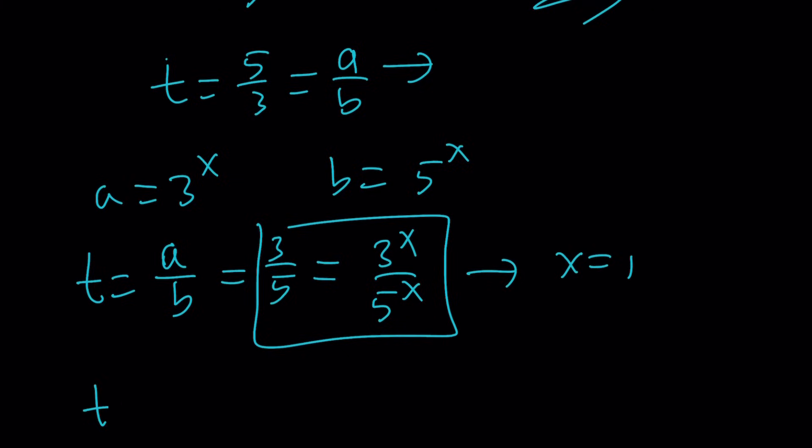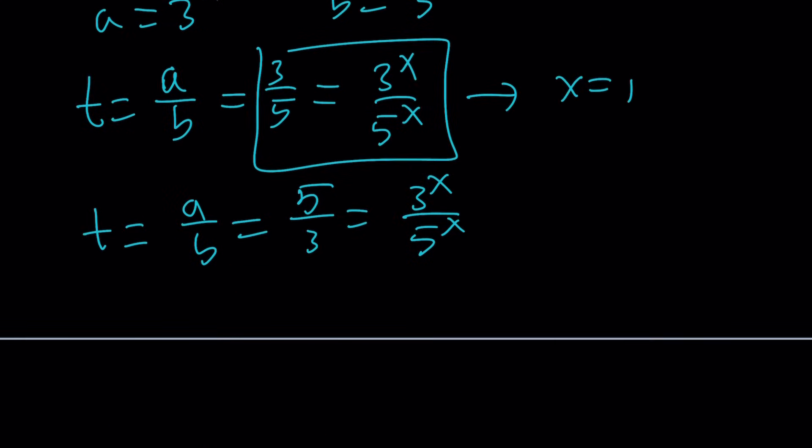When this is established, that means x is equal to 1. Or if t is equal to a over b and that's equal to 5 over 3, and that is 3 to the x divided by 5 to the x, this basically means that 3 over 5 to the x equals 5 over 3, which is the reciprocal of 3 over 5. So I have to use a negative 1. But this means that x is equal to negative 1. So x is negative 1 or 1.